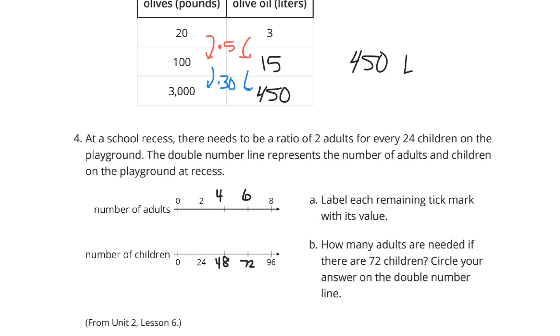How many adults are needed with 72 children? How about 6? And it said circle your answer on the double number line, so we'll circle the box. Let's keep going.